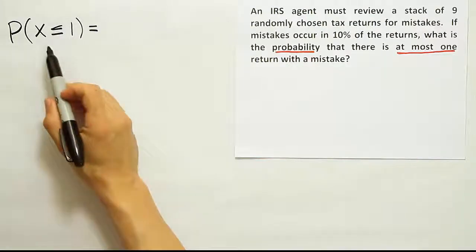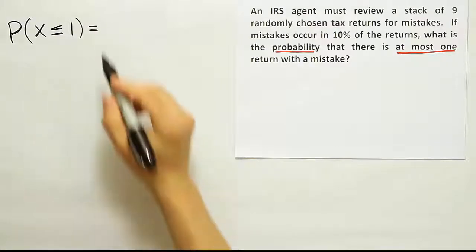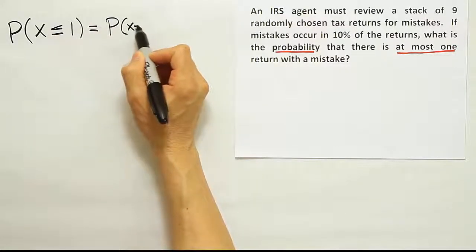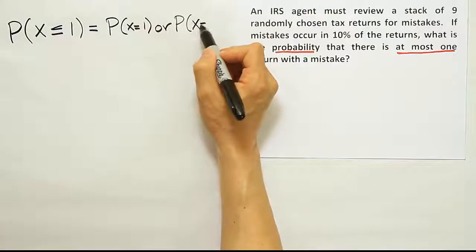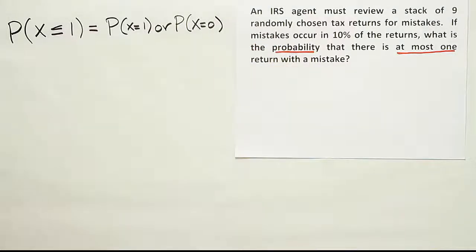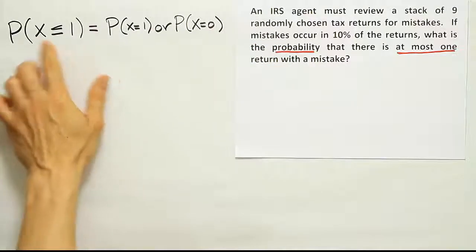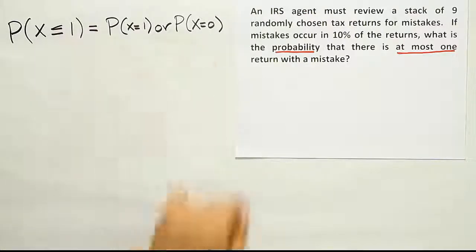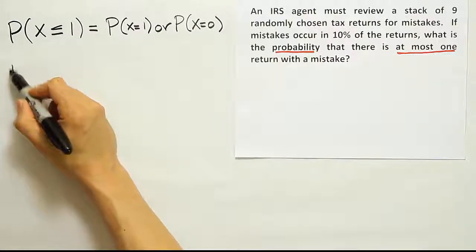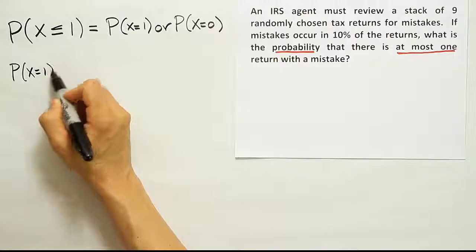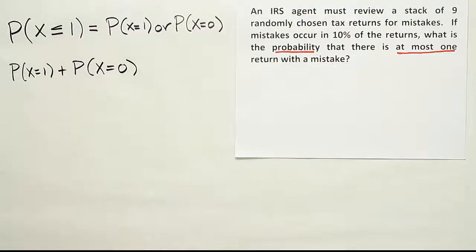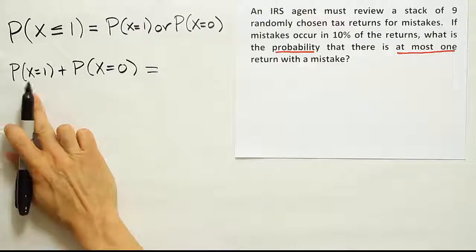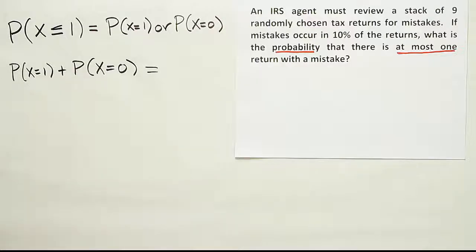If that's the scenario, then basically I have to think about what does it mean to be less than or equal to one? It means that it could be the probability that x is equal to one, or the probability that x is equal to zero. The only way x is less than or equal to one is if it's one or if it's zero. And the word or in probability means the addition rule. So basically I need to do P(x=1) added to P(x=0).